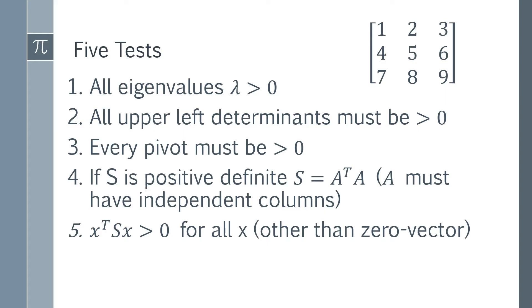The fifth test is the most complicated to apply. If you take some vector x, compute x transpose times the matrix you're testing times the original vector x, and multiply it all together, the result must be greater than zero for every single non-zero vector x. You have to prove it for every possible vector, not just one specific one — every vector other than the zero vector, which would give a special case.